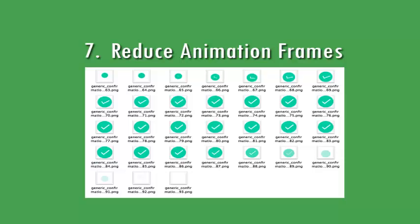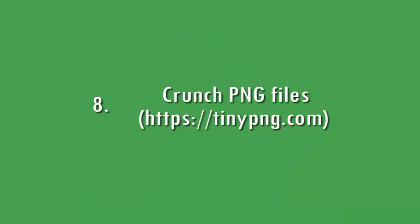Reduce animation frames. Sometimes to create frame-by-frame animation we use a lot of frames — PNGs — to generate the required output. But this costs more, because if you check the size of all the PNGs involved in a frame animation the total size is too much. Android does not compress these PNGs at the time of final APK generation, so make sure you use the minimum frames necessary to generate the required output.